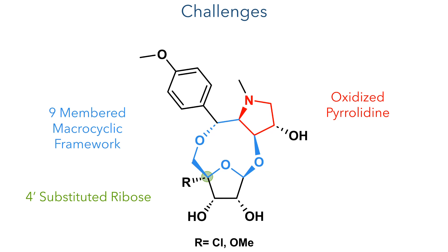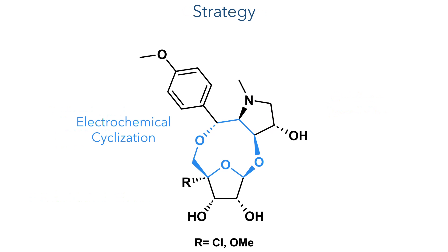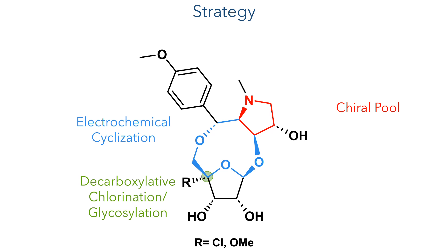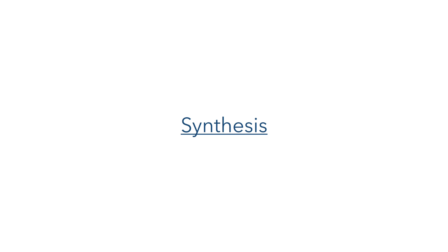The group developed a very short and efficient synthesis for these compounds. To form the macrocyclic ring, they would utilise an oxidative electrochemical cyclisation, while the stereochemistry of the pyrrolidene group could ultimately be derived from the chiral pool. The oxidised 4' position could be generated using a decarboxylative chlorination, which could be followed up with a glycosylation. So let's start with the synthesis.